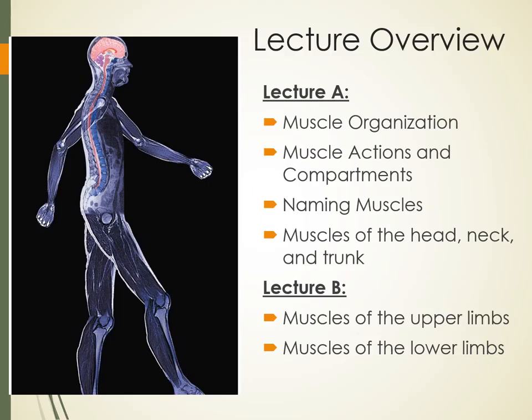So what are we going to talk about today? We're going to talk about how muscles are organized in the body, how they're named, and what some actions are that they do. We know the movements our joints can do, so now we're going to put muscles on top of that, covering the head, neck, and torso trunk muscles. Next time we'll cover muscles of the upper and lower limbs, along with the shoulder and hip muscles.